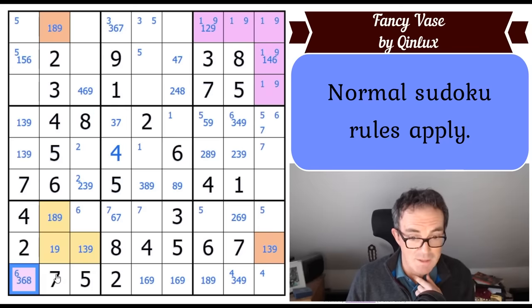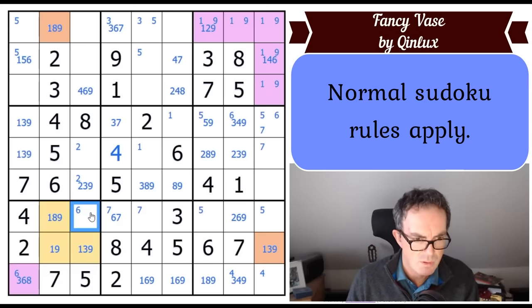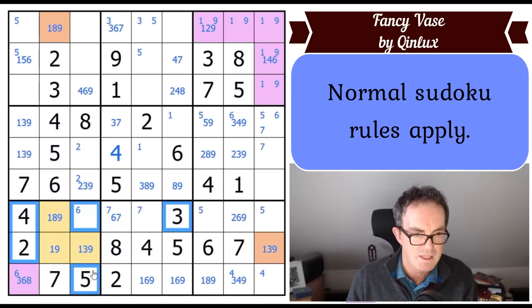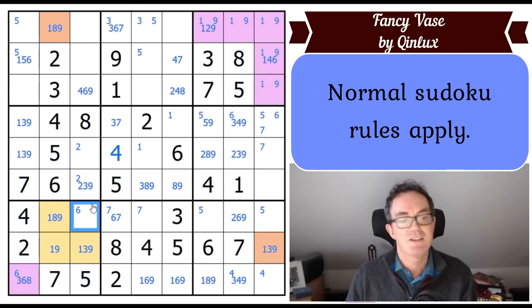And that is a bit disappointing because that was what I was hoping was going to yield some magic. But what can this digit actually be then? If it's not one or nine, it's got to be three, six, or eight. So that cell has become absolutely useless. That square also can't be one or nine.